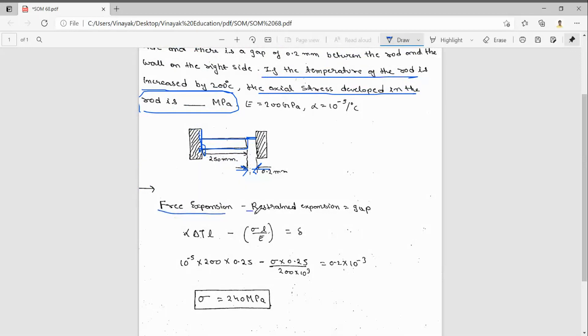Free expansion minus restrained expansion equals gap. So now, free expansion is alpha delta T times L, and what is restrained expansion? Sigma L by E. That is equal to... why are we writing this? Due to this free expansion, there will be some expansion equal to this length, that is gap plus some deformation.